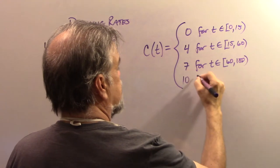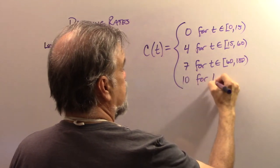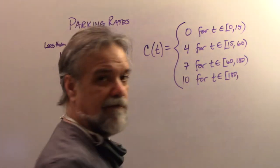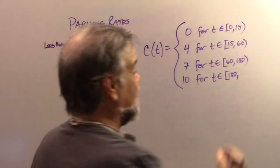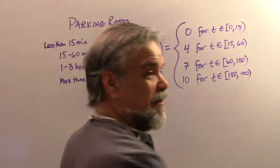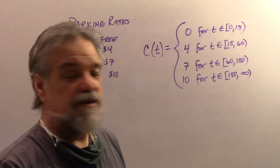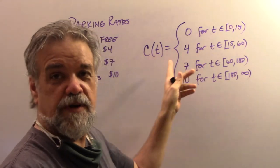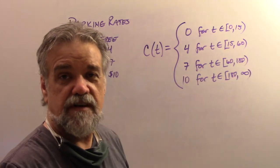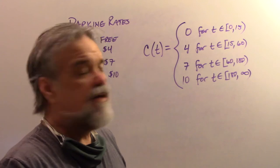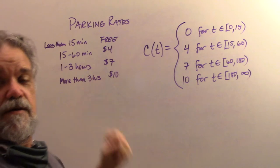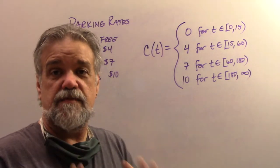C of T will be seven for T between 60 and 180. And then C of T is going to be 10 for T from 180 to, I guess, infinity. I hope they don't park there that long. And then you don't put another set bracket over here. I know it seems kind of weird to open up a set bracket here and then not have one on the other side, but that's how we do it.